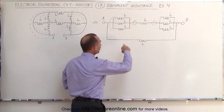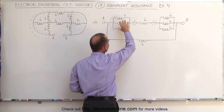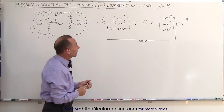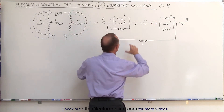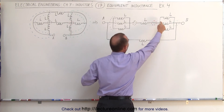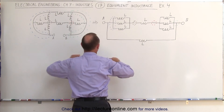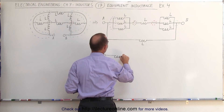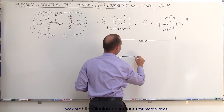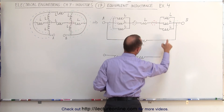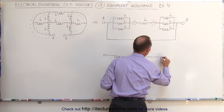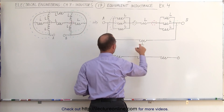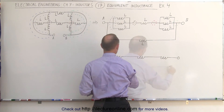First of all, when you have three inductors in parallel, the equivalent inductance is simply one third of any one of them since they're all the same value. This means we can redraw this portion of the circuit so that we have A going through a single equivalent inductor. We still have this inductor right there, and we have an equivalent single inductance before we get to B — and then we have this one here.